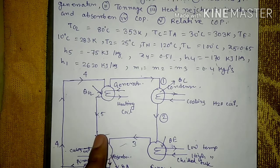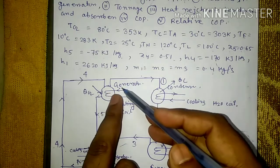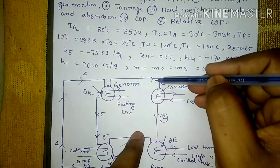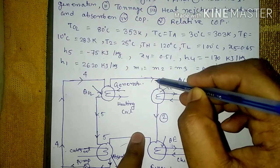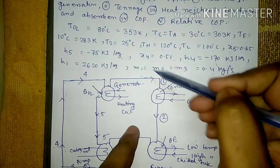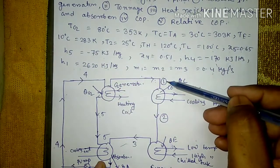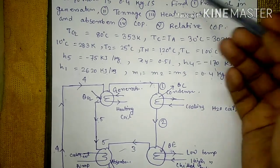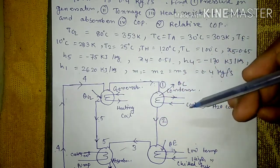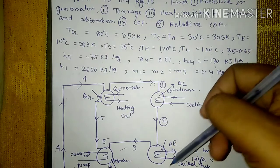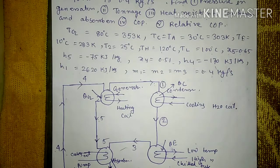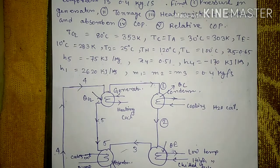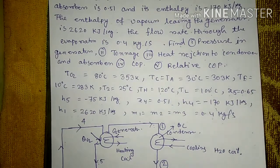The enthalpy of vapor leaving the generator is h1 = 2620 kJ/kg, and the mass flow rates through the evaporator are m1 = m2 = m3 = 0.4 kg/s. We need to calculate pressures in the generator, condenser, evaporator, and absorber; tonnage or cooling capacity; heat rejection to the condenser and absorber; and the COP.